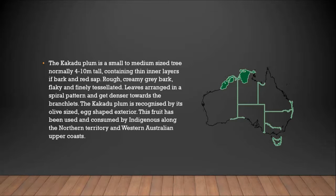The Kakadu Plum is a small to medium-sized tree, normally 4 to 10 metres tall, containing thin inner layers of bark and red sap, with rough, creamy grey bark that is flaky and finely tessellated. Leaves are arranged in a spiral pattern that gets denser towards the branchlet, and the fruit is recognised by its olive-shaped and egg-shaped exterior. This fruit has been used and consumed by Indigenous people along the Northern Territory and Western Australian upper coasts.